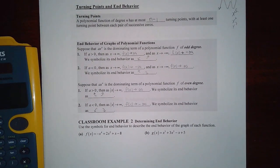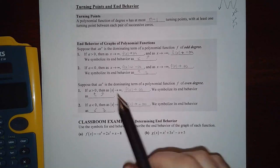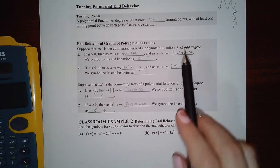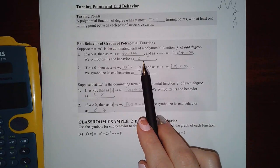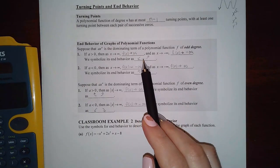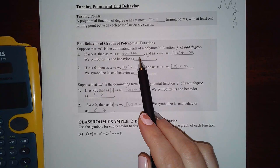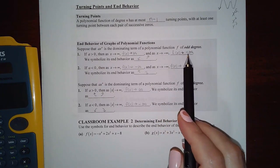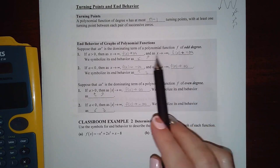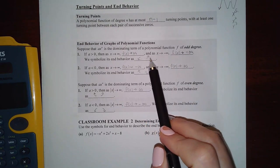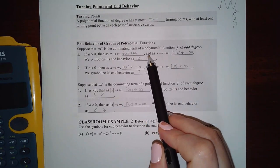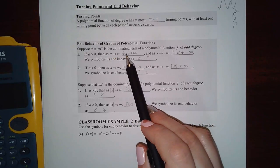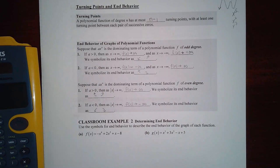Okay. For end behavior, this says that if you have an odd degree, it should have this kind of end behavior. So as x goes to the left, this should be going downward. So as x goes to negative infinity, it should be going toward negative infinity, the y value. And then as x goes to the right, the y value should be going to positive infinity. So as x goes to infinity, the y value is to positive infinity.